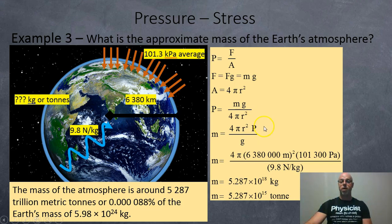So now we're just going to rearrange the formula, cross-multiply the 4 pi r squared over to the p side, divide the g over, flip the equation, and we've got this equation here. The mass of the atmosphere is 4 pi r squared times the pressure divided by g.